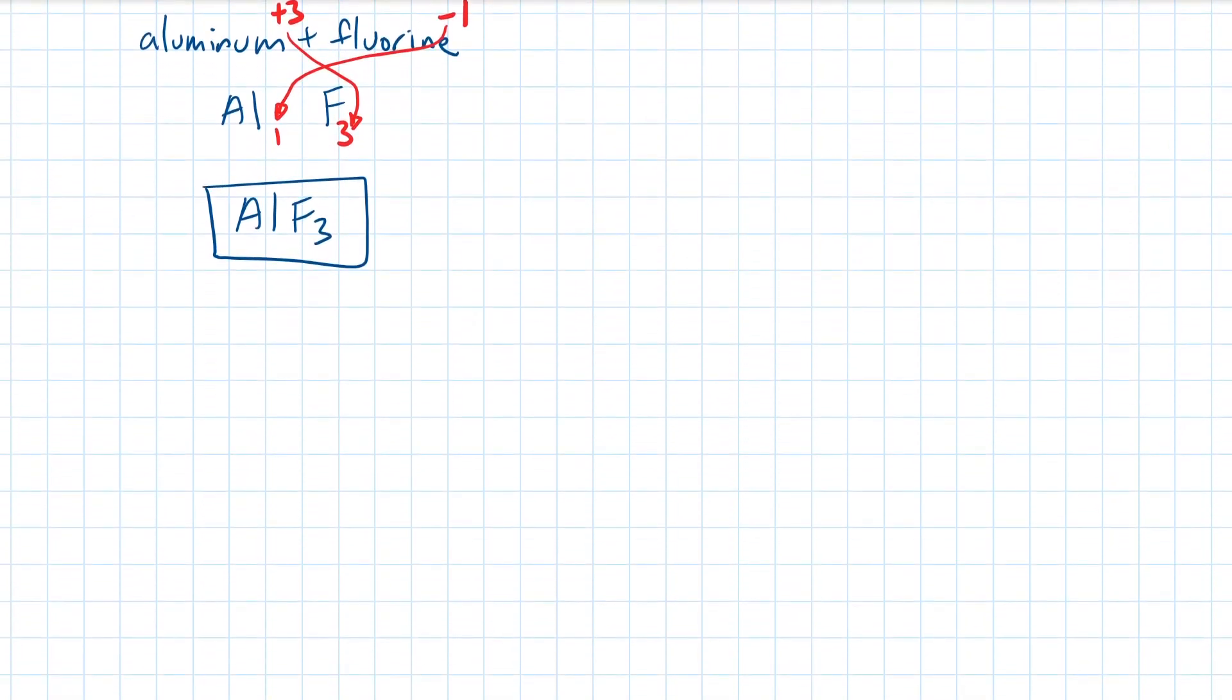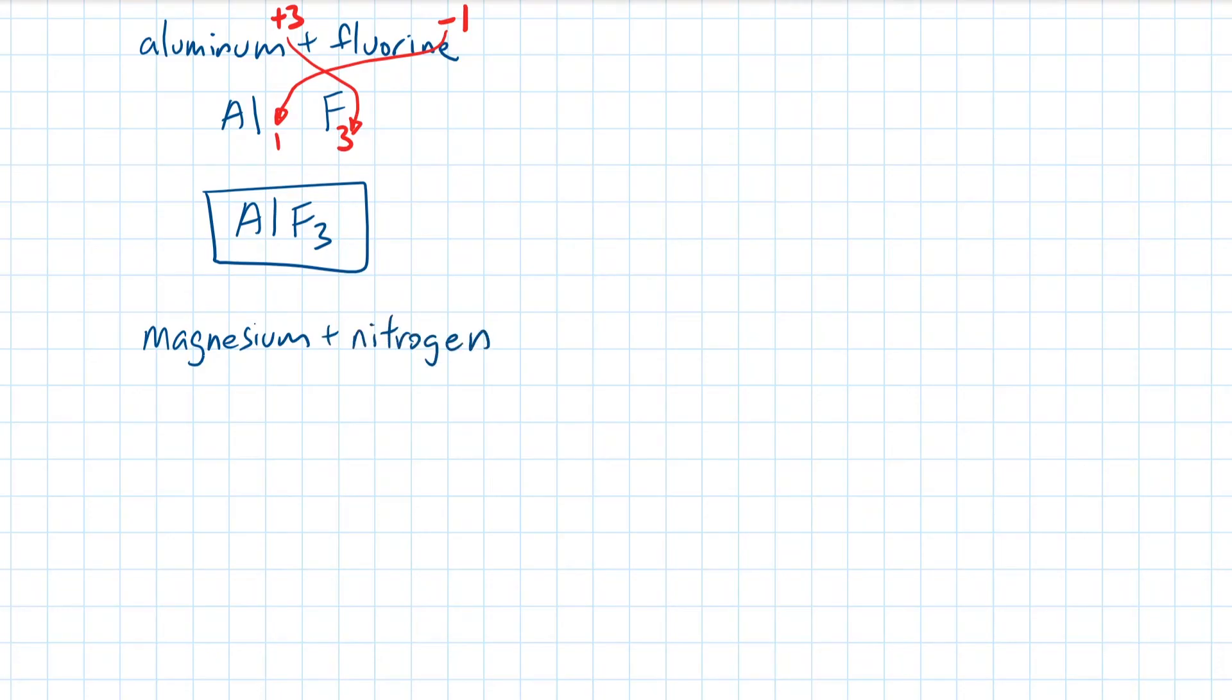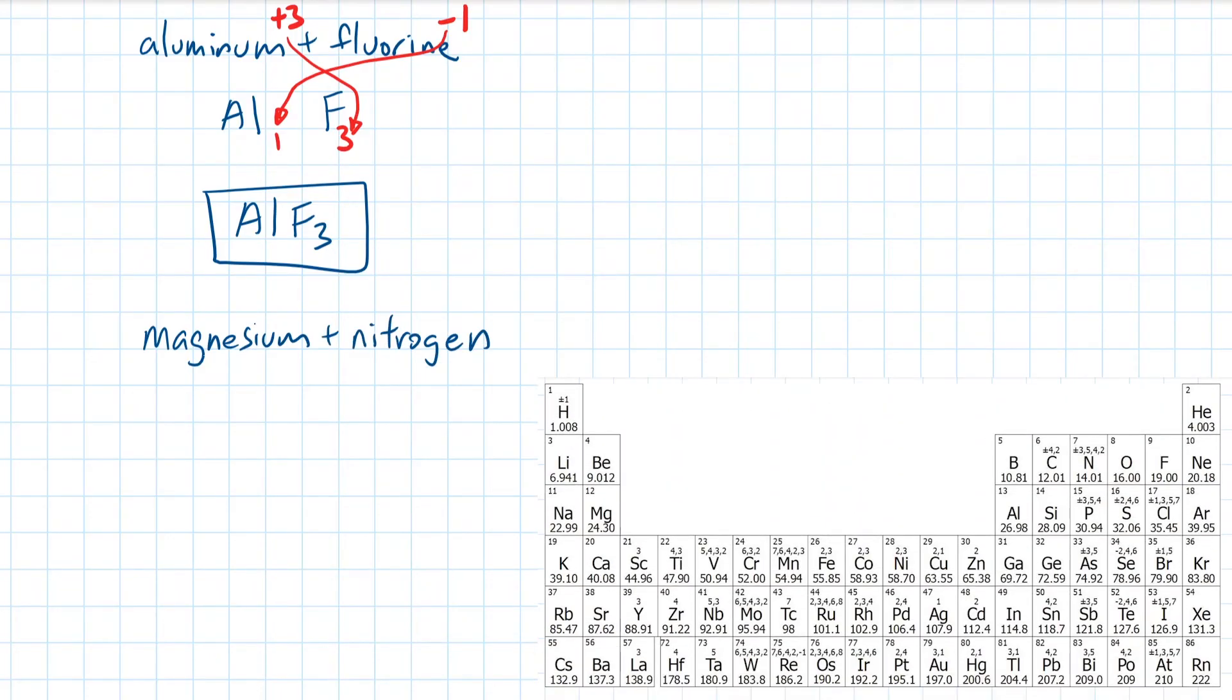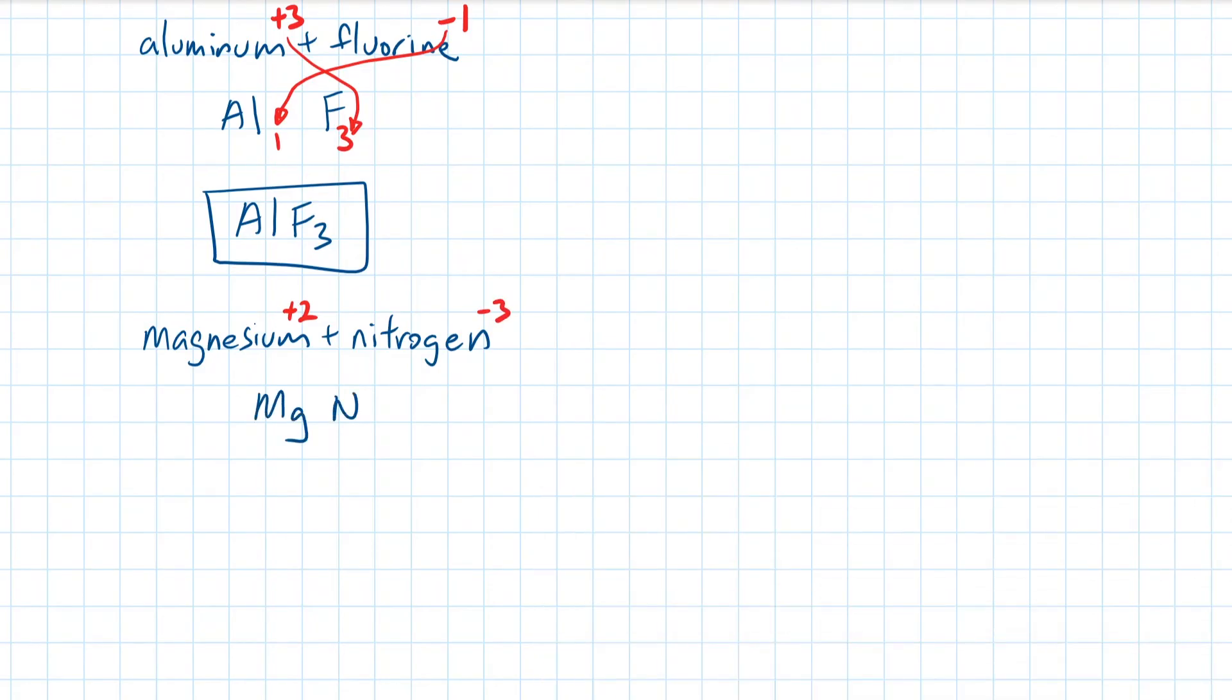One last example. Magnesium plus nitrogen. Magnesium has a charge of plus 2, and nitrogen has a charge of minus 3. We write down the symbols Mg and N, then cross over the positive values of 2 and 3. We end up with Mg3N2, and that's the final answer.